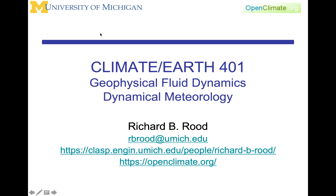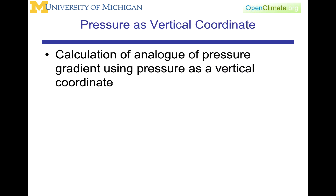In this lecture in Climate and Earth 401, we're going to start the process of using pressure as a vertical coordinate. What we're going to focus on is the calculation of an analog of pressure gradient using pressure as a vertical coordinate. In the momentum equation, the pressure gradient is one of the most important forces. However, if we're going to use pressure as an independent variable and as a vertical coordinate, we cannot use the same form of the pressure gradient, so we have to determine how pressure is represented physically when using pressure as a vertical coordinate.